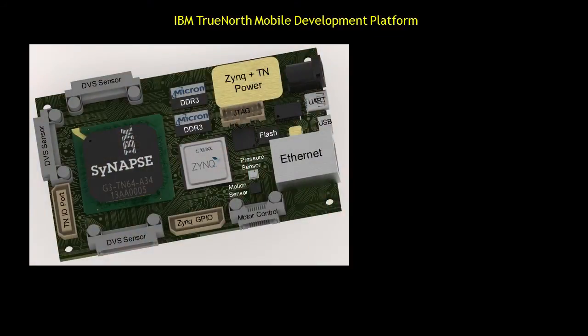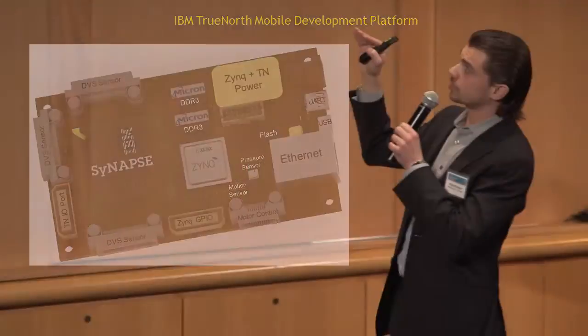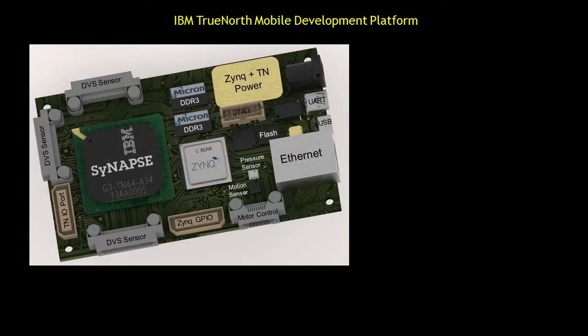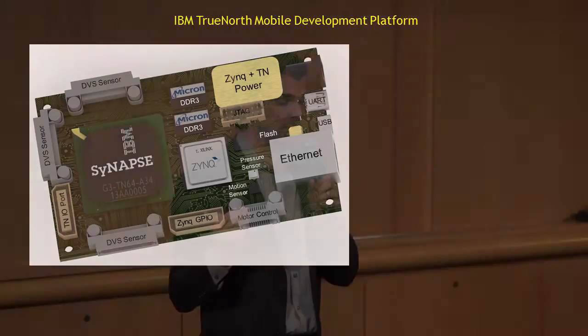We've also built several sensors right into this board: a pressure sensor as well as a motion sensor, which combines a gyroscope, a magnetometer, and an accelerometer. We also have various additional I/O connectors. This board can control a motor — we have a motor control connector that can generate pulse-width modulated signals or any other encoding directly from the Zynq FPGA.